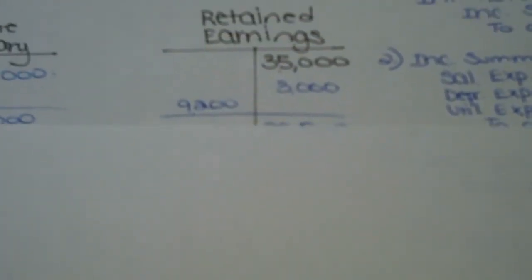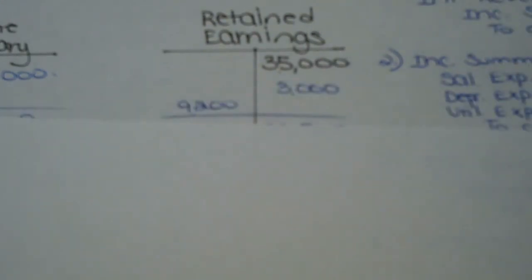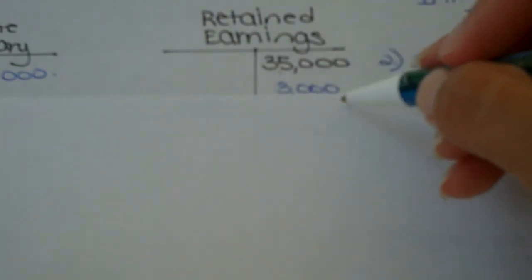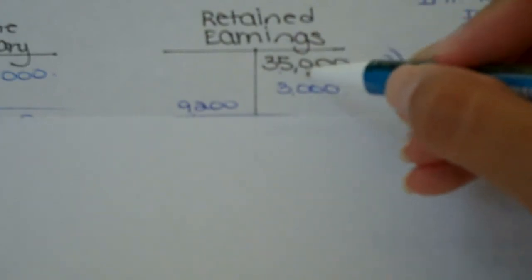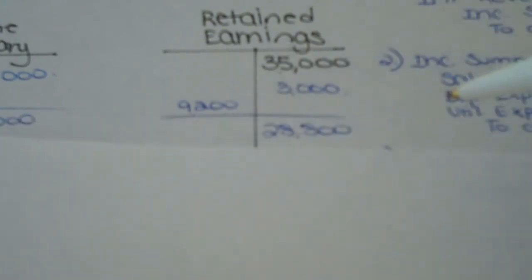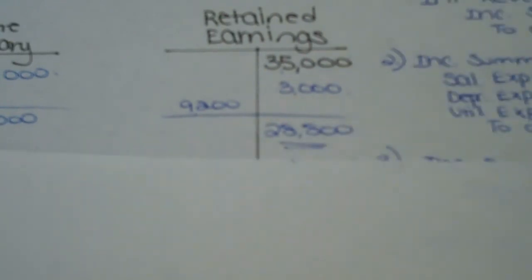Let's go ahead and see what our retained earnings account looks like. We were told we had a beginning credit balance of $35,000. We then increased this account for the $3,000 of net income, and then decreased this account for the dividends paid out in the period. So you take the $35,000, add the $3,000, subtract the $9,200, and you find that your ending balance is $28,800. That answers the question posed in the textbook and completes this problem.